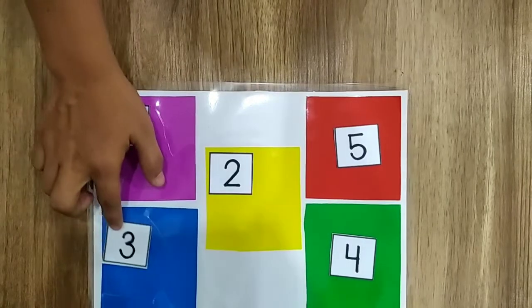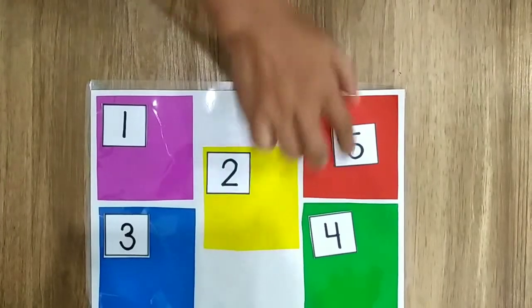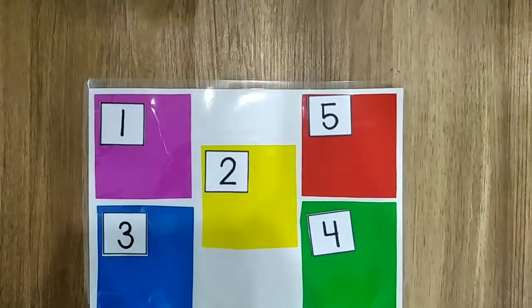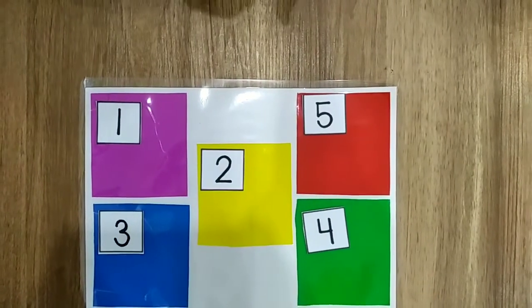The last one is number two. Number two on the yellow square. Now take your counters.